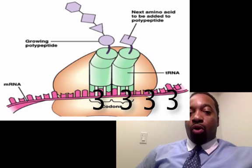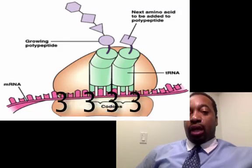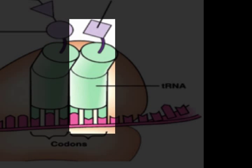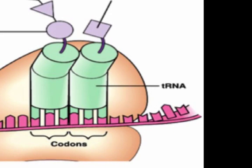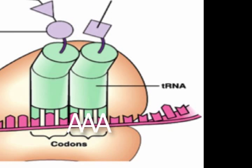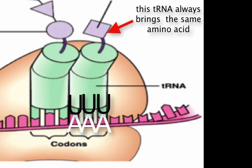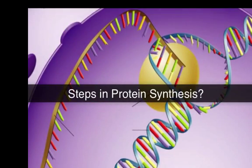The ribosome reads the mRNA three letters at a time — reading the codons. When it stops on a codon, only one tRNA is going to be able to enter the ribosome and attach to that mRNA. Only the complementary tRNA will fit, and that tRNA brings only one particular amino acid. For example, if the mRNA has AAA, the tRNA with UUU is the only one that can attach there, and UUU tRNA always brings one particular amino acid. This is how we control which amino acids are added to the protein.